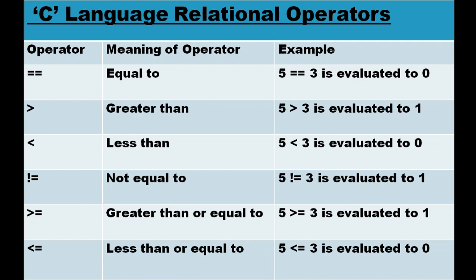Second is the greater than sign (>). Check: 5 is greater than 3. Yes, 5 is greater than 3, so this will be true and will display one. Next, less than sign (<): 5 is less than 3 — no, so it evaluates to zero. Next is the not equal to sign (!=): is 5 not equal to 3? Yes, so the answer will be one.